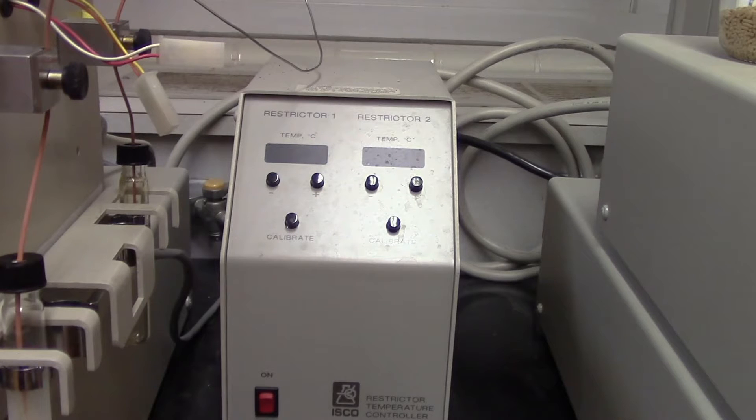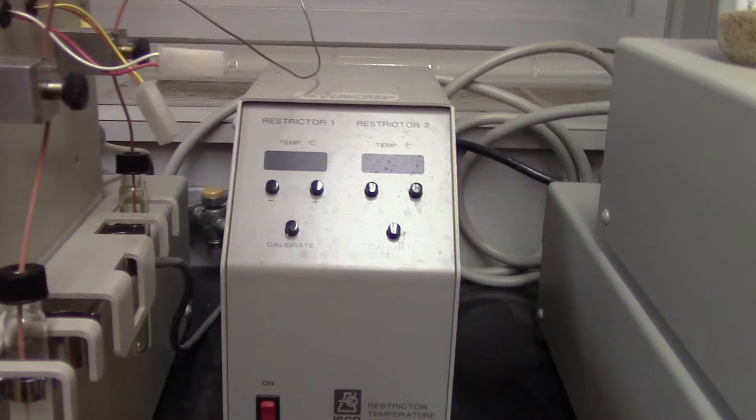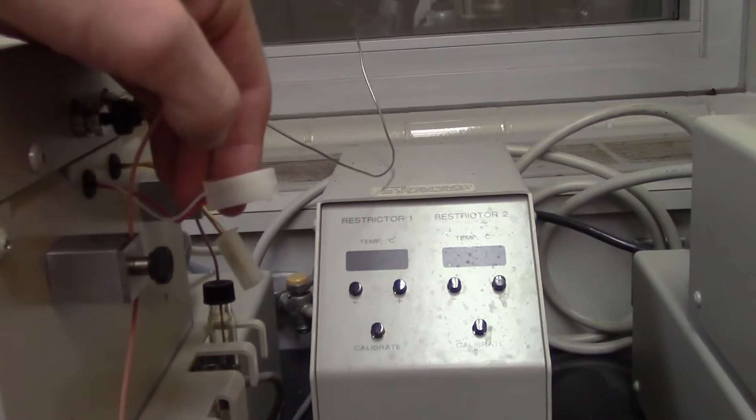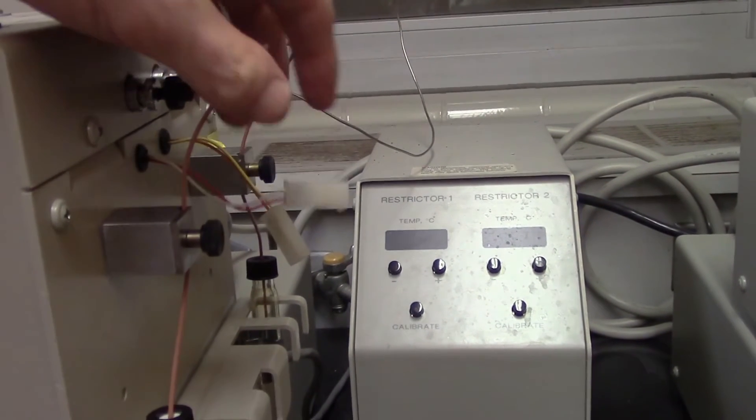This extraction unit also came with a restrictor heater. This is supposed to reduce blockage in the outlet tubes by preventing ice buildup during extraction. Unfortunately, all the parts couldn't be found, so it currently can't be used.